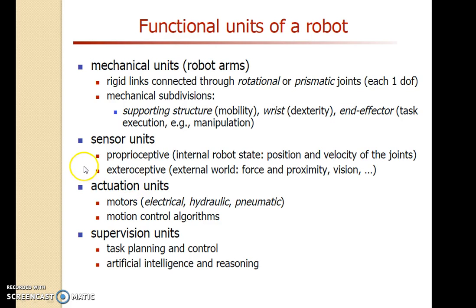The controlling parts are mechanical units, sensor units, actuation units, and supervision units, which are used for controlling the robot. The mechanical units are the robot's arms — rigid links connected through rotational joints — that are the supporting structures for robots. Sensor units are used to sense any position or anything. Actuation units mean actuators for motion control — motors, hydraulic actuators, electrical actuators, and pneumatic actuators. Supervision units handle task planning and control, meaning artificial intelligence and reasoning.